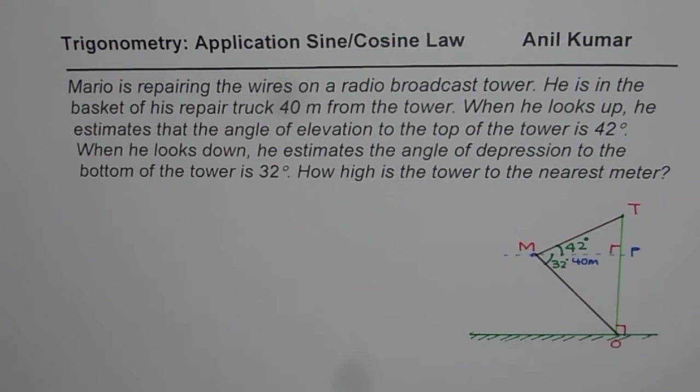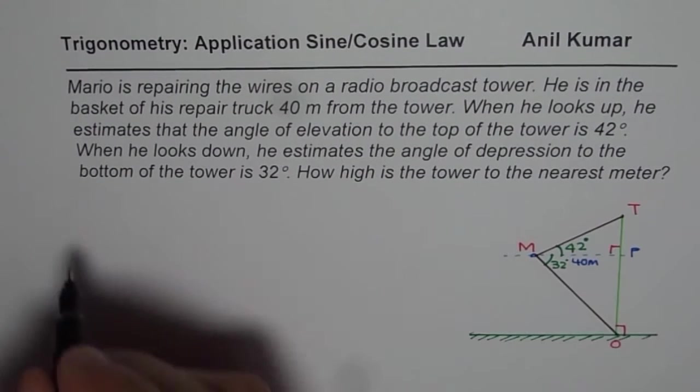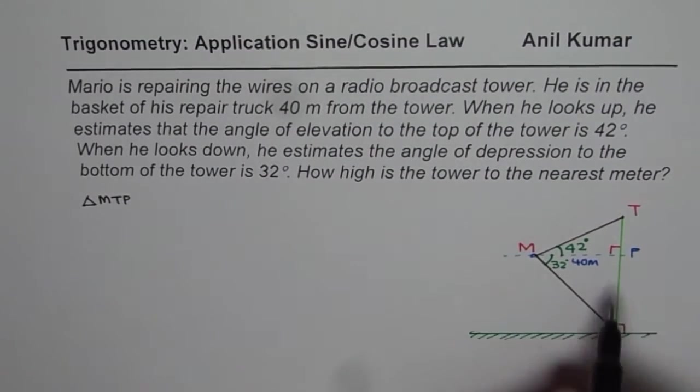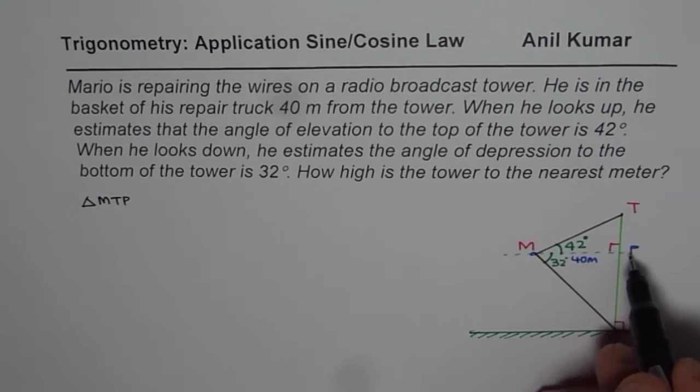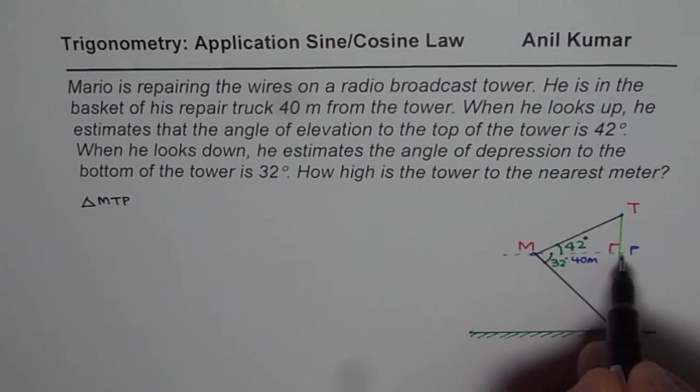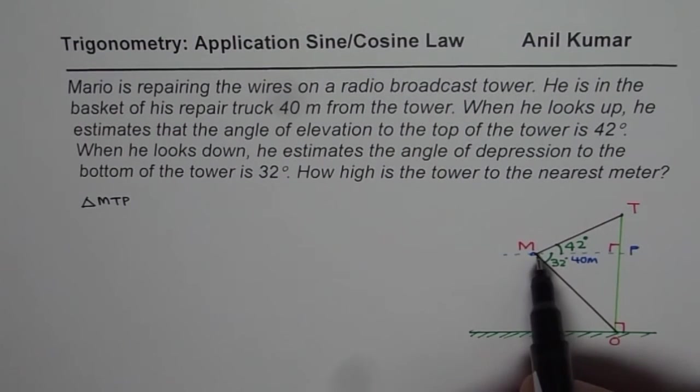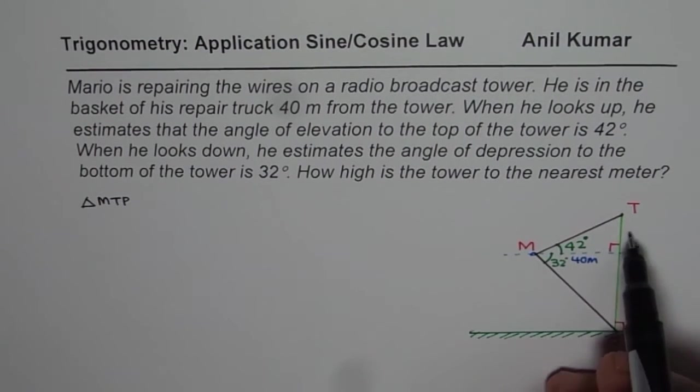From here, what you notice is that we have two right triangles. One of them is MTP. So, we have triangle MTP, which is a right triangle. Here, we can find what TP is, since we know what MP is, the distance of Mario from the building, 40 meters. The ratio which connects TP with the given distance is tan.